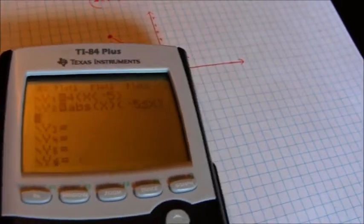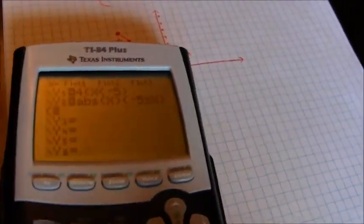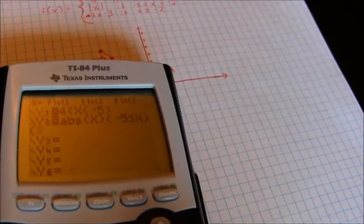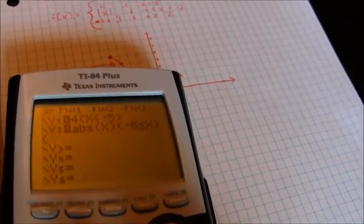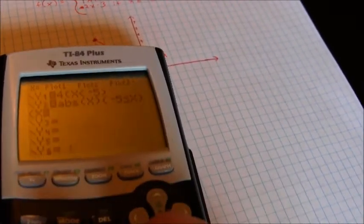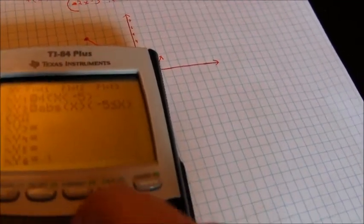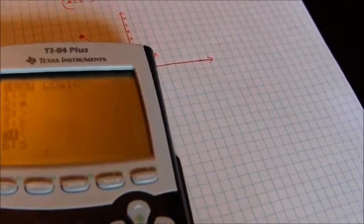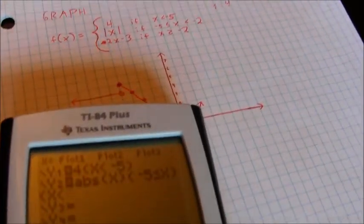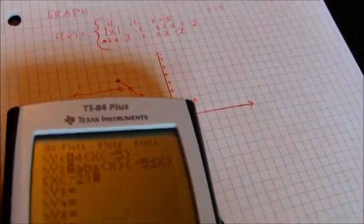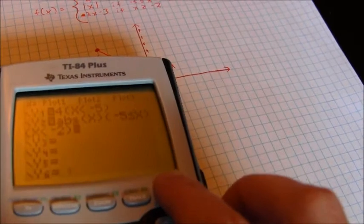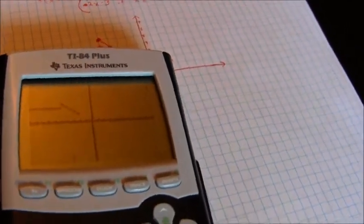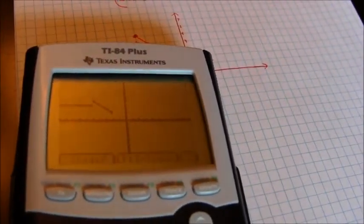So you notice I closed out my parentheses there, and then I'm going to create new parentheses. I want x to be less than negative 2. And again, if you graph this, you can now see the new part of the graph popping up here.